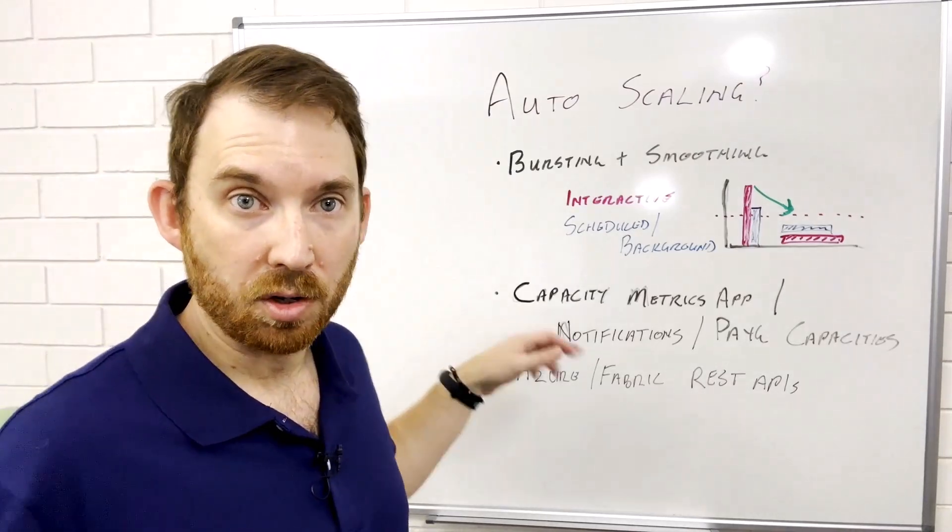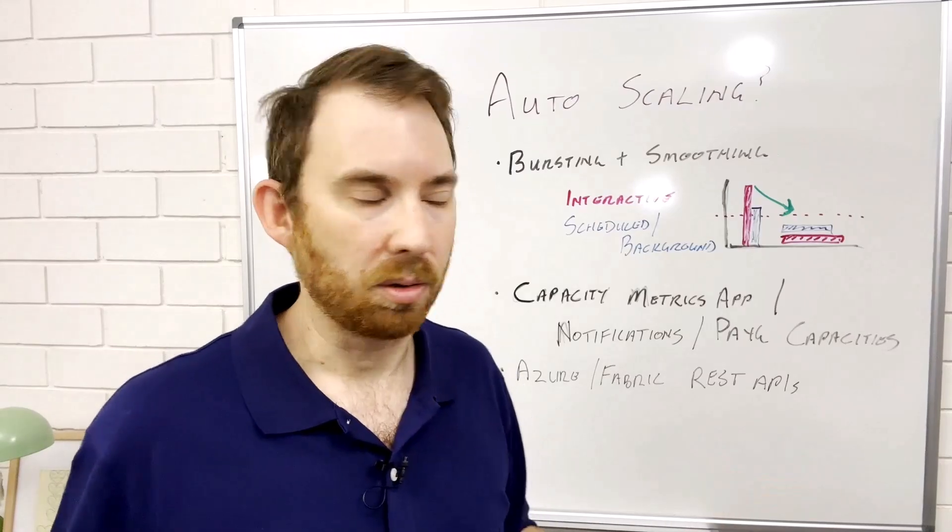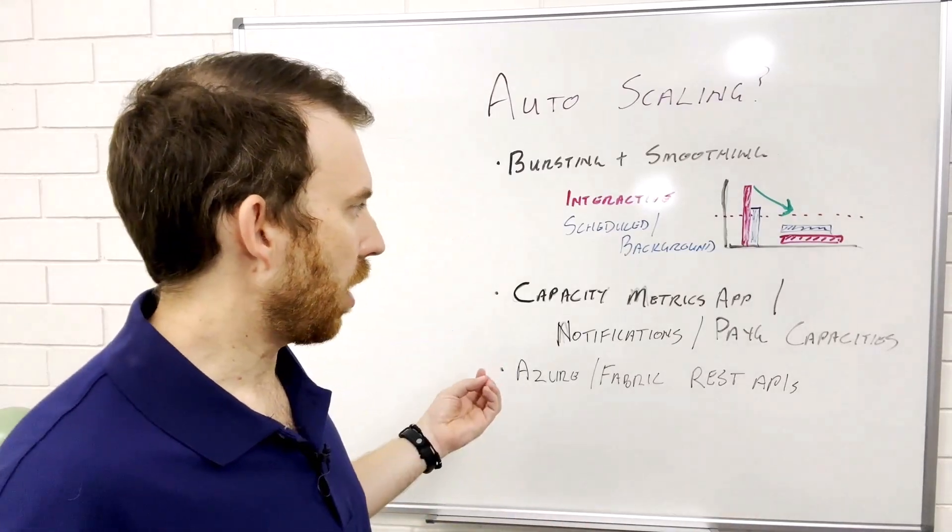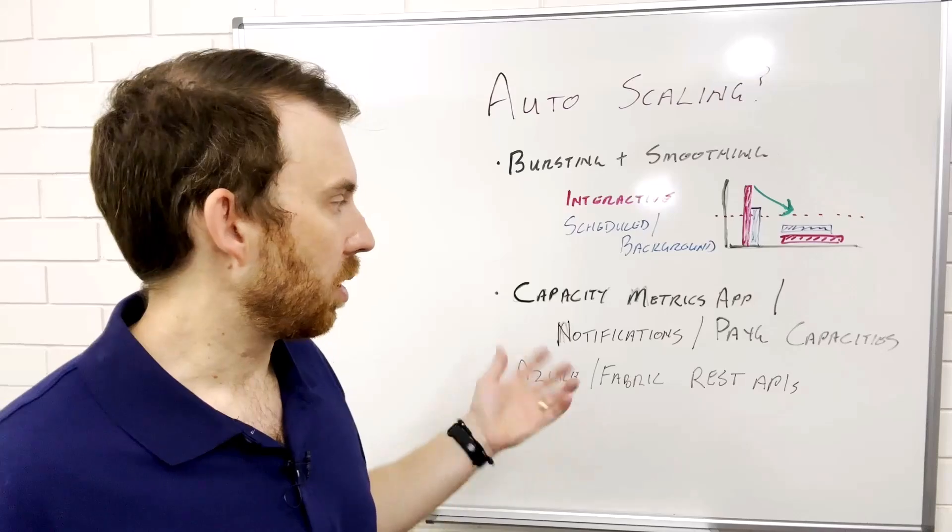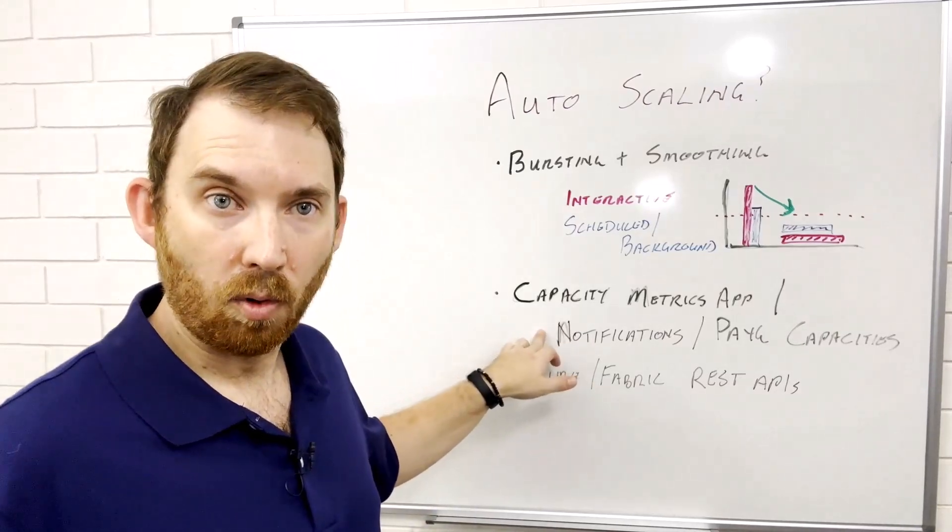Now how do you best manage that? The capacity metrics app which the commenter mentioned is one way you can monitor your workloads absolutely and that's a really useful way to understand what's going on in your environment.